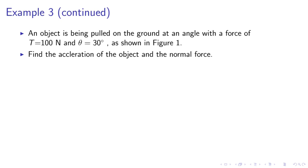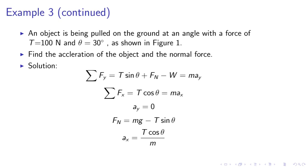Example 3 continued. So we now find the acceleration of the object and the normal force. So we solve for the sigma Fy and sigma Fx. So sigma Fy equals T sine theta plus Fn, the normal force, minus W which is equal to may. Sigma Fx equals T cosine theta equals max. But we know that the acceleration in the y direction is zero, so ay equals zero. Solving the equation we find Ax equals T cosine theta over m.